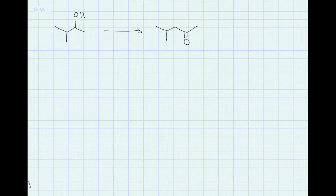Let's take a look at this problem from quiz number 13. So we need to go from this secondary alcohol over to this ketone. And the first thing you should notice when you look at this problem is that there is a different number of carbon in each skeleton.